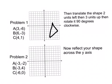So the next step we have to do is then translate the shape two units left, then three up. And what I mean by that is move each dot two units left, and then three up, so watch. Right there, here, and here.